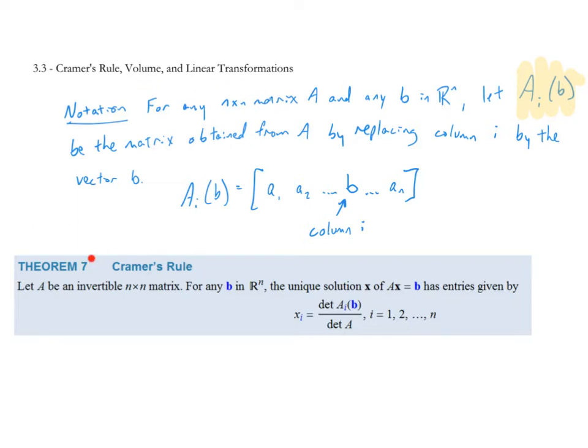First, we'll start with Cramer's Rule, which is Theorem 7. Your textbook has a proof of this theorem and why it is true in all cases, but I'm not going to do that in this video. It would be good to read through, but it's a little bit more confusing proof. Notation-wise, Cramer's Rule uses some different notation that is important to understand, but in explaining it, hopefully it will make sense.